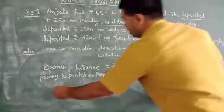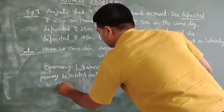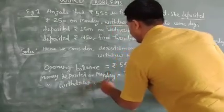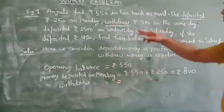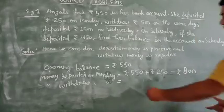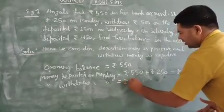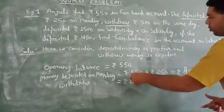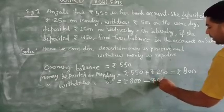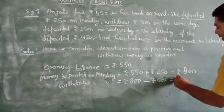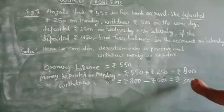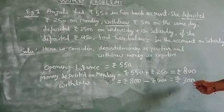Now, money withdrawn. With the withdrawal, the money is Rs.500. The account balance is Rs.800. The withdrawal is Rs.500. The final account balance is Rs.800 minus Rs.500, that is Rs.300.